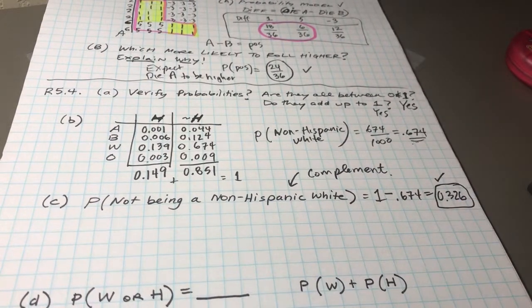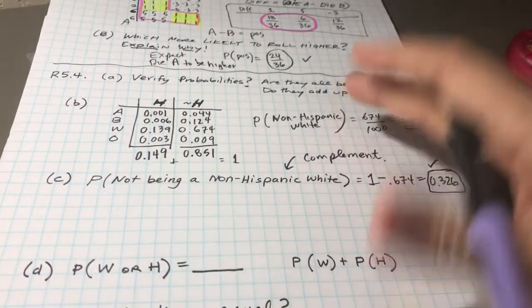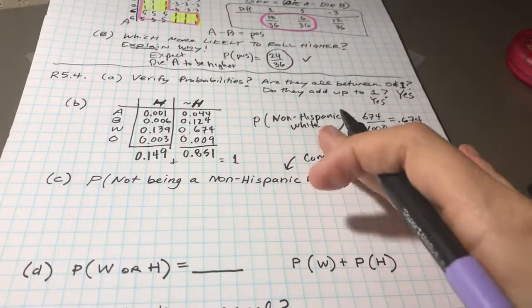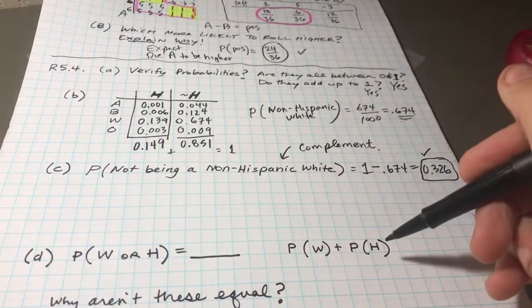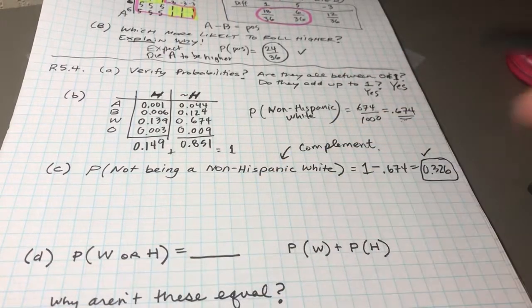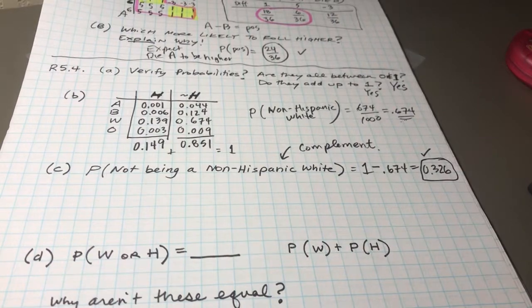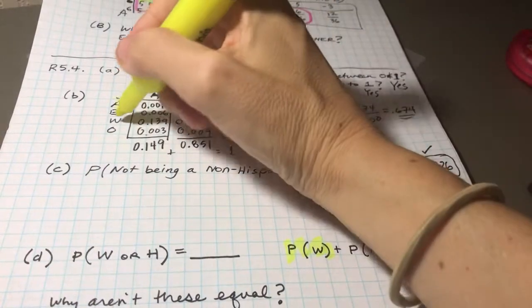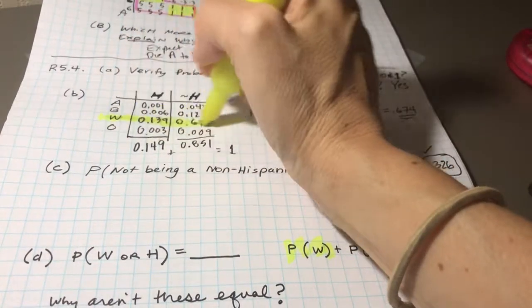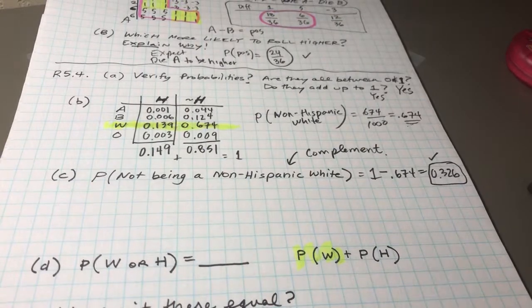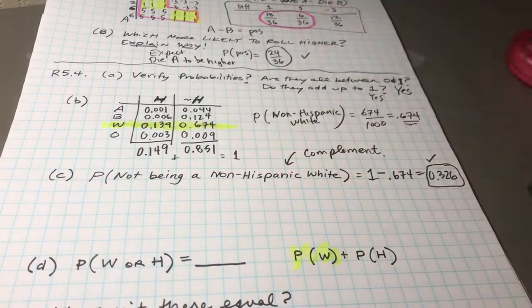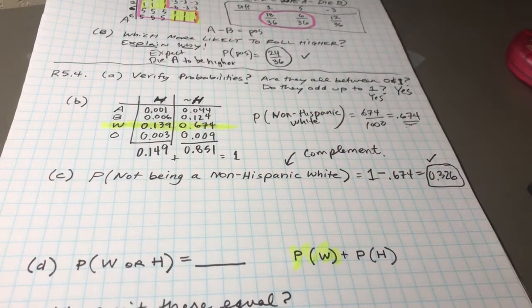So again, I'm making these videos not because the answers aren't provided, but maybe you're not sure exactly where those numbers came from. So I'm hoping this brings a little bit more clarity. Now they're asking the question: what's the probability of white or Hispanic? And then they're asking what's the probability of white plus Hispanic? And why aren't these equal to each other? So that's when it's fun to manipulate with these numbers. So let's look at the probability of being white.